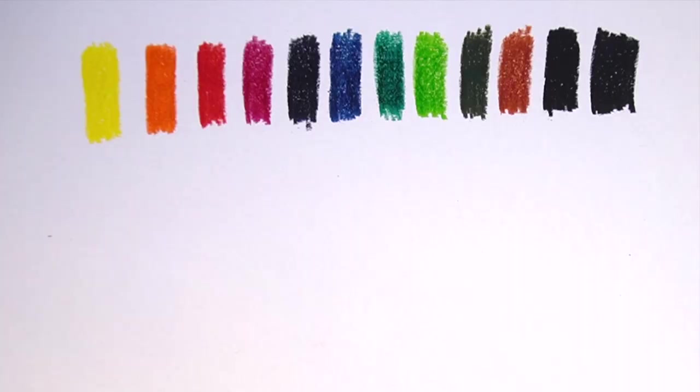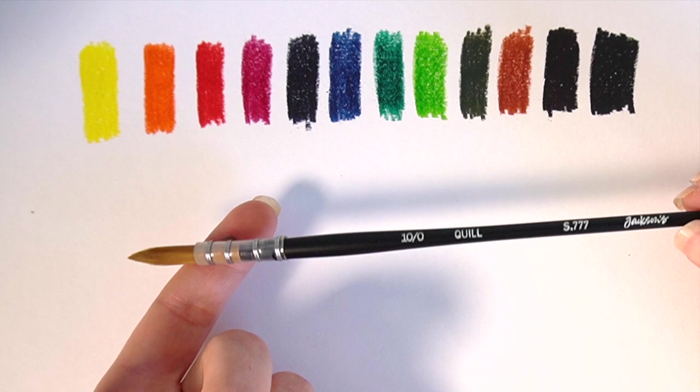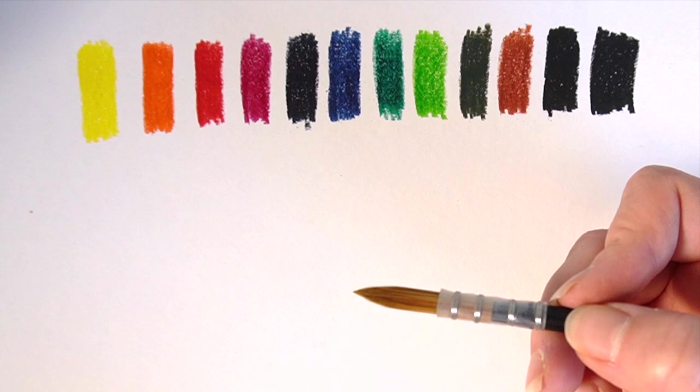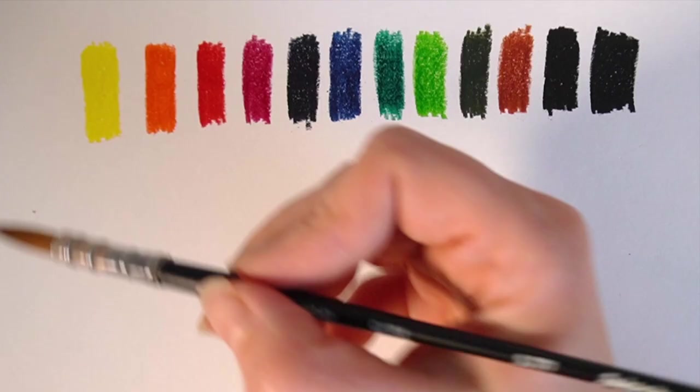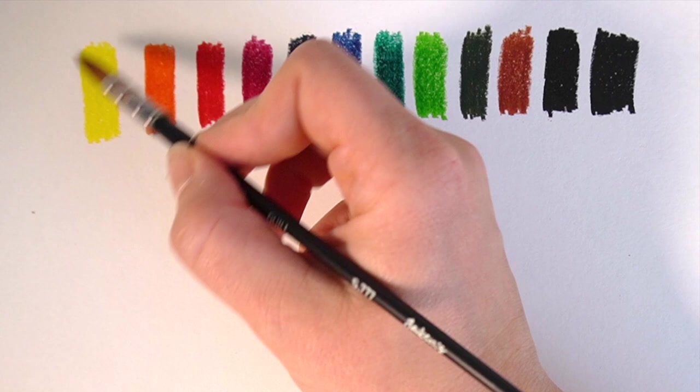So let's activate these with a bit of water. I'm going to use my Jackson's Quill paintbrush for this one. If you've been here for a while, you know I love these paintbrushes. I just think that they're absolutely fantastic. I'm going to activate the coloring pencil.